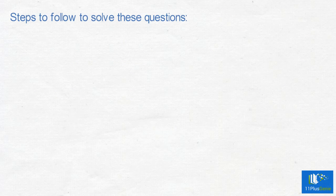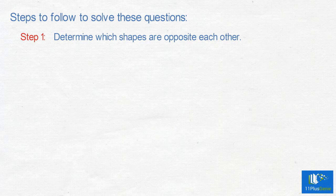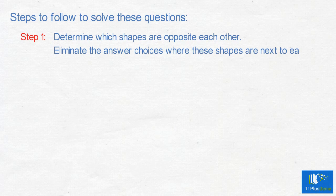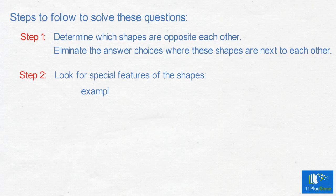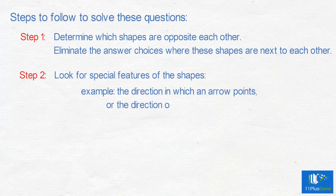Steps to follow to solve these questions. Step 1: determine which shapes are opposite each other, and eliminate from the answer choices the cubes with these shapes next to each other. Step 2: look for special features of the shapes — for example, the direction in which an arrow points, or the direction of the open end of a shape.